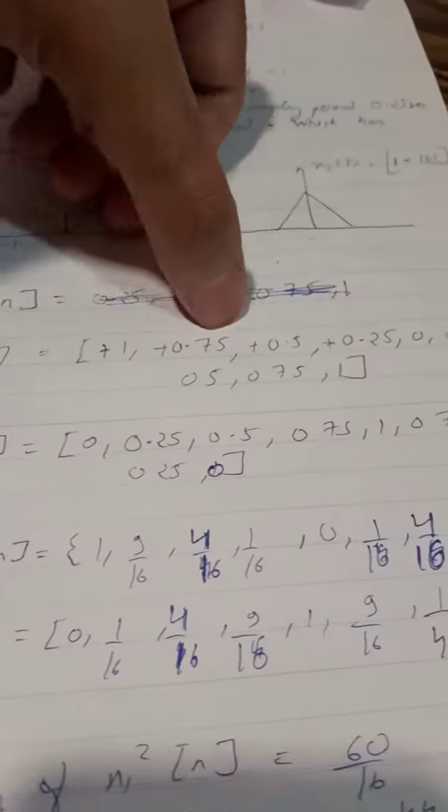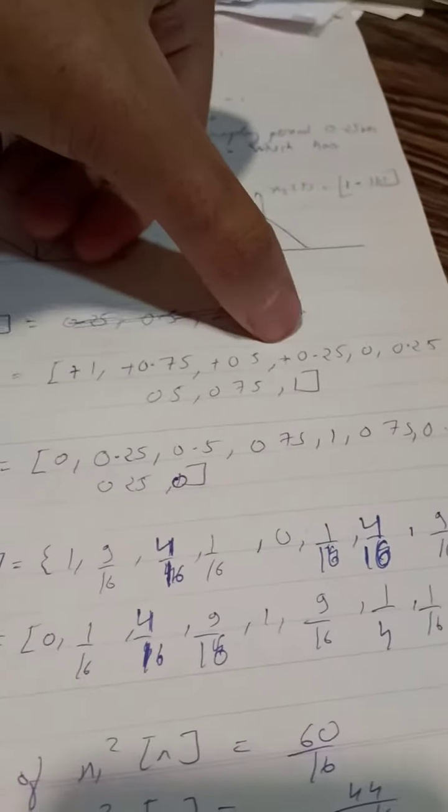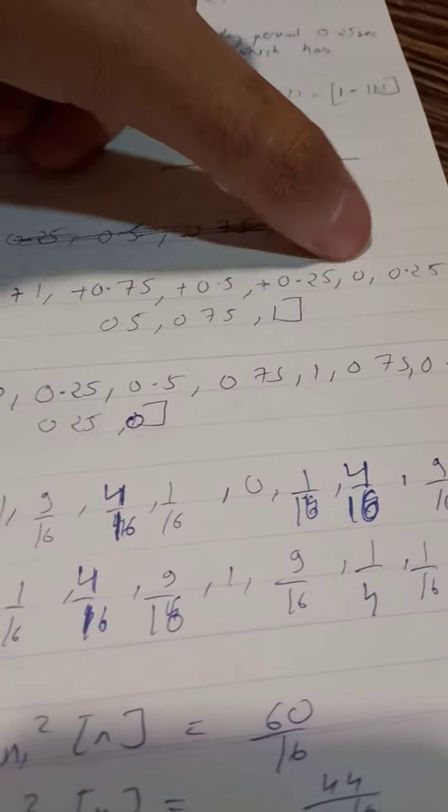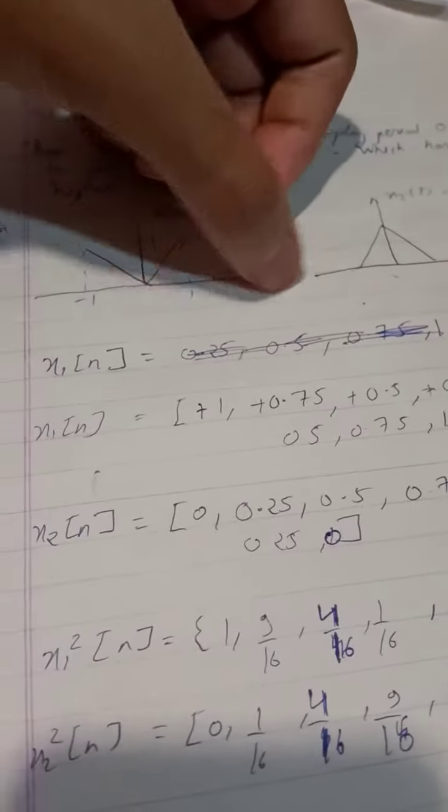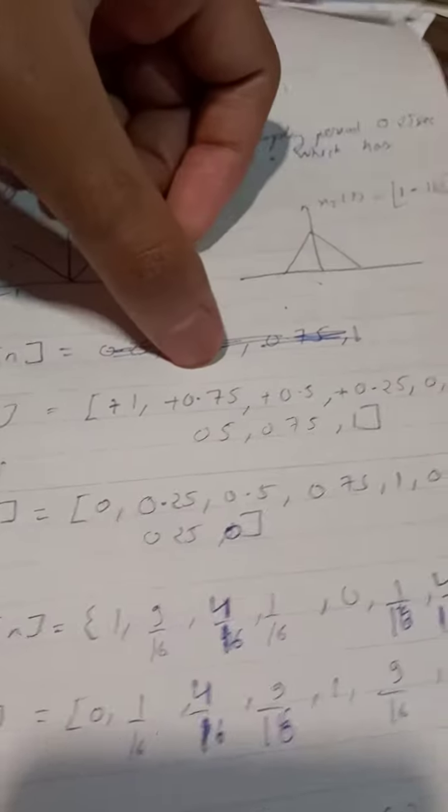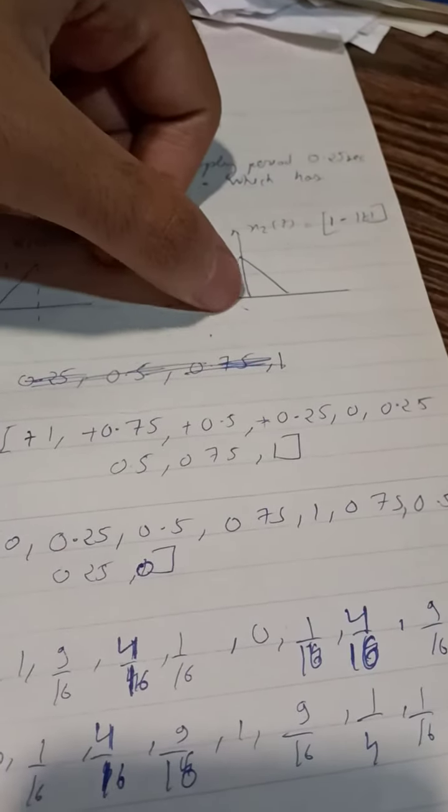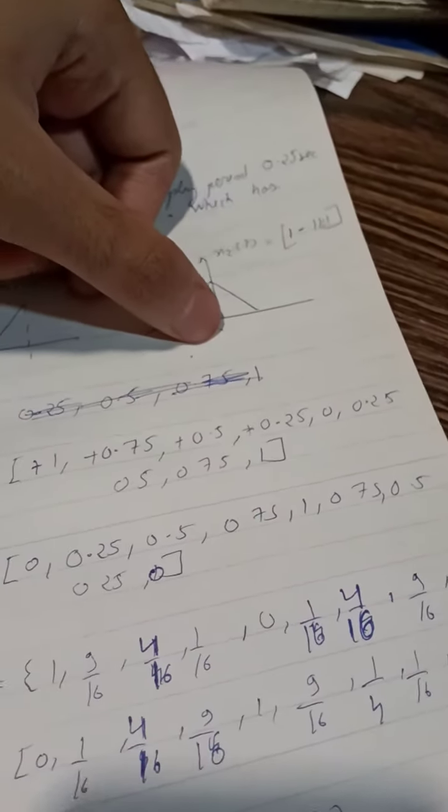So x1n will be 1, 0.75, 0.5, 0.25, 0.25, 0.5, 0.75, 1 from minus 1 to 1. Similarly when we take sample of x2n we get 0, 0.25, 0.5, 0.75, 1, 0.75, 0.5, 0.25, 0.